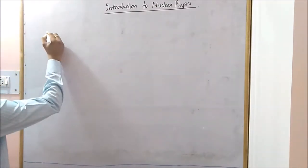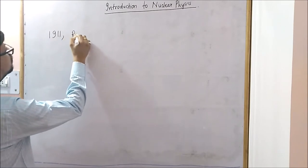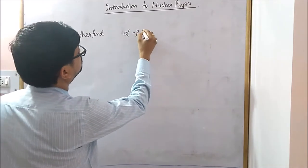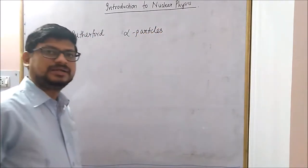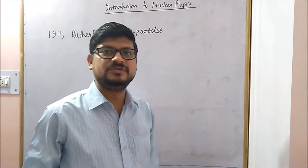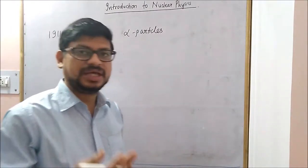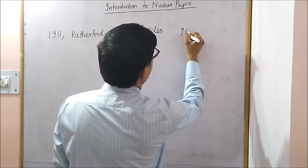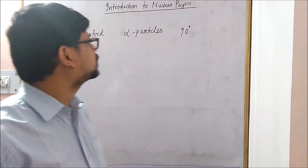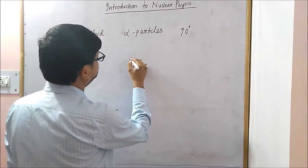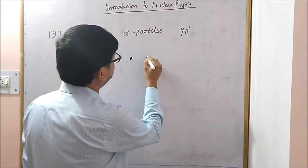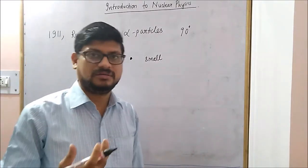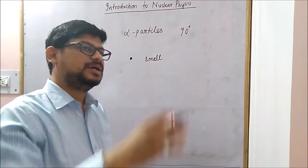In the year 1911, Rutherford, in his famous experiment of scattering of alpha particles by matter, found that some of the alpha particles — very few as a matter of fact — were deflected by the thin foil, and the deflection in a few of the alpha particles was even more than 90 degrees.